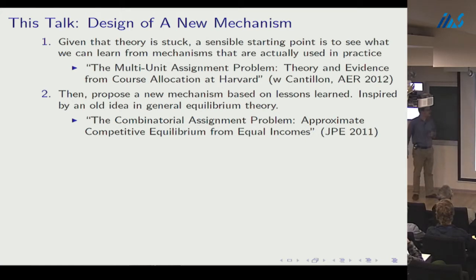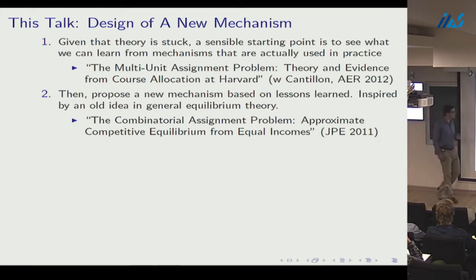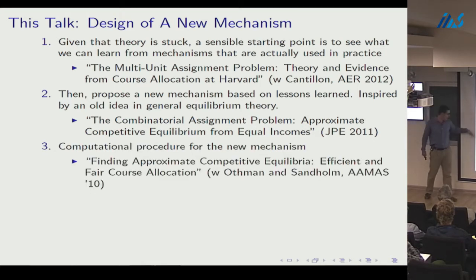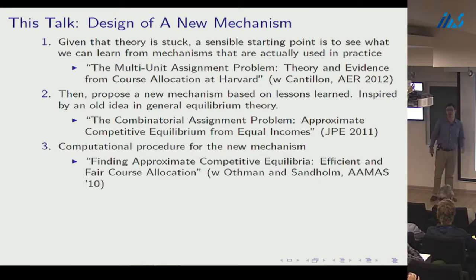The new mechanism is inspired by an old idea in general equilibrium theory: the competitive equilibrium from equal incomes. We'll also discuss a computational procedure for this mechanism — since existence theorems rely on non-constructive fixed point theorems, we need a way to actually find approximate market-clearing prices. This is joint work with computer scientists Abe Othman and Thomas Sandholm.